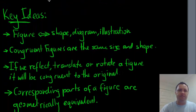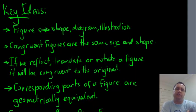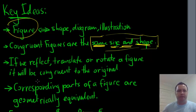Right, some key ideas for you. The word figure, because you'll see that sort of popping up in some of our questions, the word figure means the same thing as shape, diagram, or illustration. So if you see the word figure, it means shape, diagram, or illustration. So congruent figures are the same size and shape. That's very important. This is the thing that you need to take away from this, that they're the same size and shape.